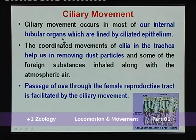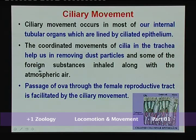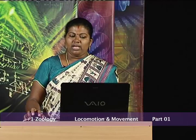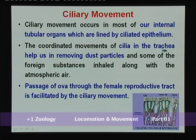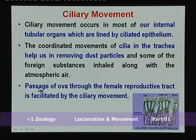Second is ciliary movement. Ciliary movement occurs in most of our internal tubular organs which are lined by ciliated epithelium. The coordinated movement of cilia, especially in the trachea, helps in removing dust particles and foreign substances inhaled with atmospheric air. In the female reproductive tract, the passage of ova is facilitated by ciliary movement.